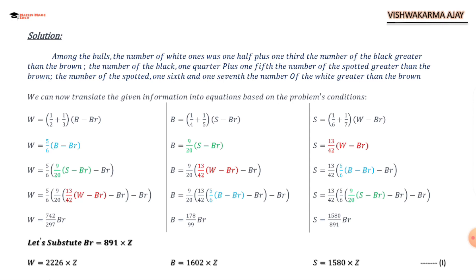Now comes the very interesting part. We substitute Br = 891 × z, where z is any integer value. The reason is that the denominators 297, 99, and 891 all share an LCM of 891. Since the number of cattle cannot be a fraction, we must eliminate the denominators. Substituting Br = 891z gives: W = 2226z, B = 1602z, S = 1580z. Remember this as equation number one.